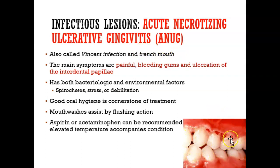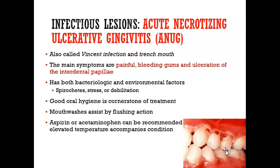ANUG is also known as trench mouth. It got that name because in World War I, young soldiers would come back with severe pain in their mouths. If you are undergoing a lot of stress and trauma, this can happen in your mouth. They built trenches to hide in, which is where the name comes from. It's also known as Vincent infection, named after Dr. Vincent who identified the condition. The first thing that gets affected is the interdental papilla, and then the gingival margin.